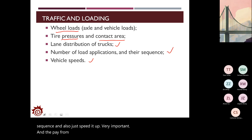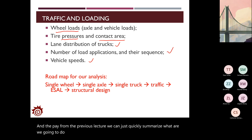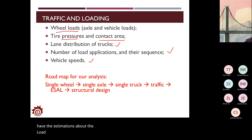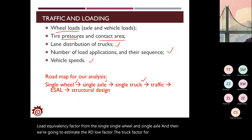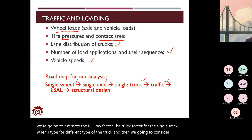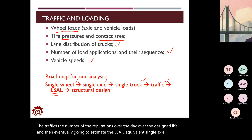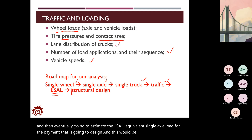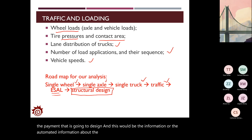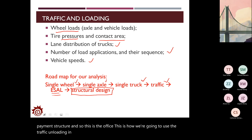From the previous lecture, we estimate the load equivalency factor from single wheel and single axle, then estimate the truck factor for different truck types, consider the number of repetitions over the day and design life, and finally estimate the ESAL—the equivalent single axle load—for the pavement being designed. This is the key information about traffic and loading for pavement structural design.